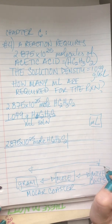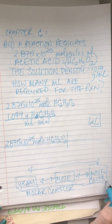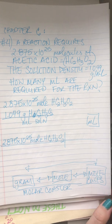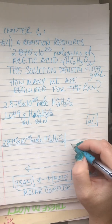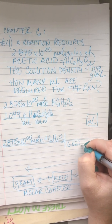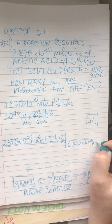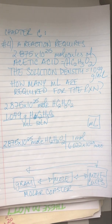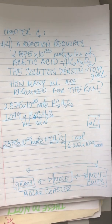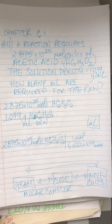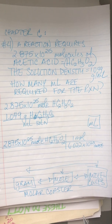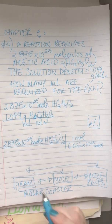My first conversion is going from molecules to moles. What piece of information do I need to make that jump? Avogadro's number — 6.022 times 10 to the 23rd molecules per one mole. So now I'm at moles.